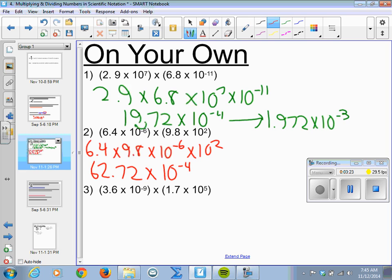This one gets smaller, so I end up getting 6.272, and again, this 10 to the negative 4th becomes 10 to the negative 3rd.